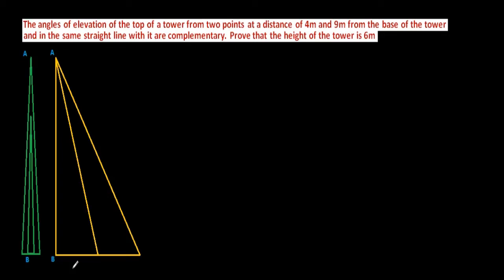Hello everyone. Today's question is: the angles of elevation of the top of a tower from two points at a distance of 4 meter and 9 meter from the base of the tower and in the same straight line with it are complementary. Prove that the height of the tower is 6 meter.